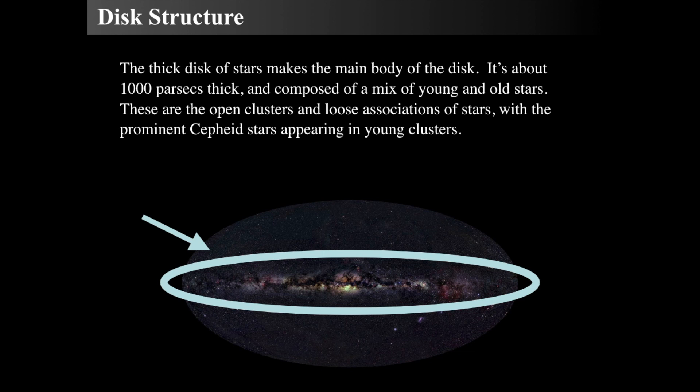The disk structure itself has a thick disk of stars — all spiral galaxies have this thick disk, about 1,000 parsecs or 3,000 light years thick, composed of young and old stars. The young stars are in open clusters and loose associations, called OB associations. Cepheid variables appear in young clusters, because they are massive stars going through their horizontal giant branch phase — a very short but extraordinarily luminous phase.